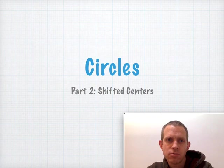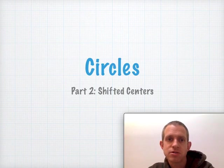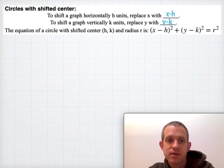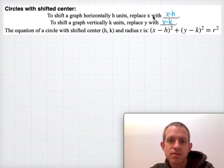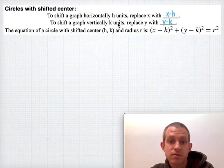In our last video we talked about circles that were all centered at (0,0), and in this video we're going to learn how we can shift those to be centered anywhere else. The general idea is when we shift anything left, right, up, or down: to shift a graph horizontally a certain number of units you'll simply take the x out of the equation and replace it with x minus something. If you want to shift something vertically you'll simply take the y out and replace it with y minus something.